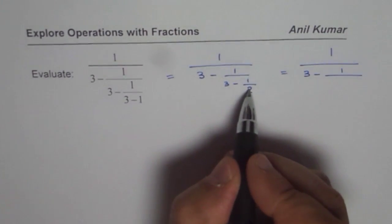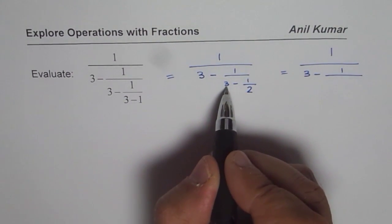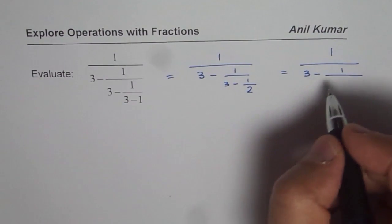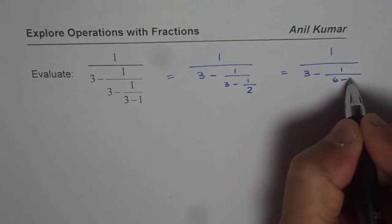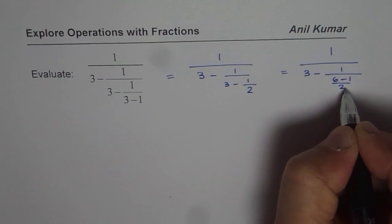To make common denominator as 2, we will multiply and divide 3 by 2. So it becomes 6. So we have 6 minus 1 over 2.